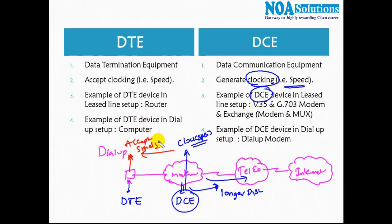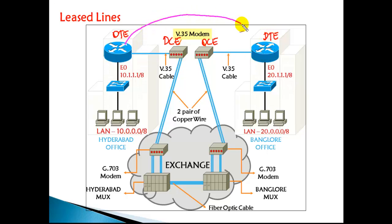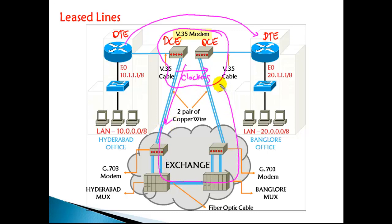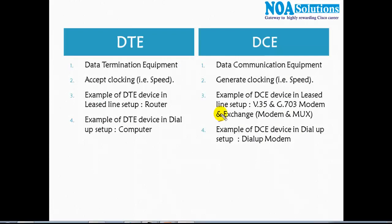The same kind of setup exists with our routers. We have DCE devices, which are more like service provider devices, and DTE devices, which are the routers. For communication from DTE to DTE over the service provider network across longer distances, we need modems that generate clocking, helping data travel over longer distances. These DTE and DCE terminologies are used to identify the different kinds of devices involved.